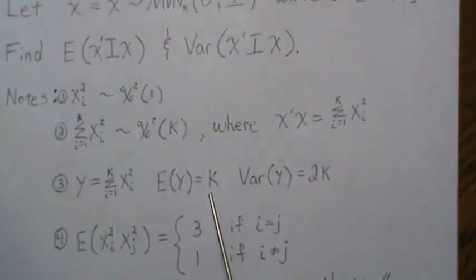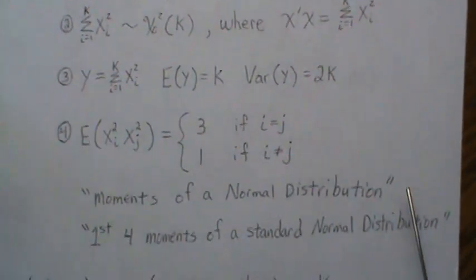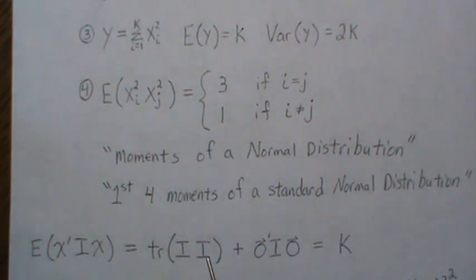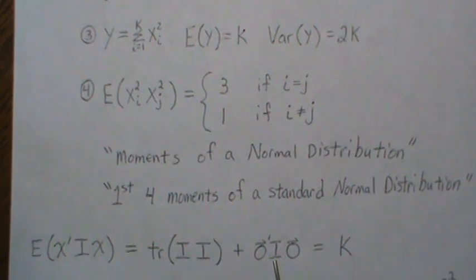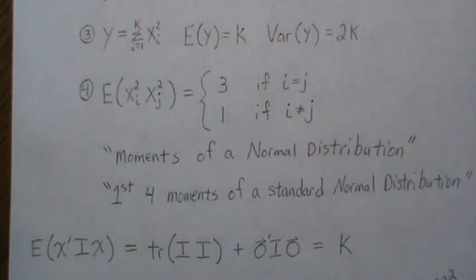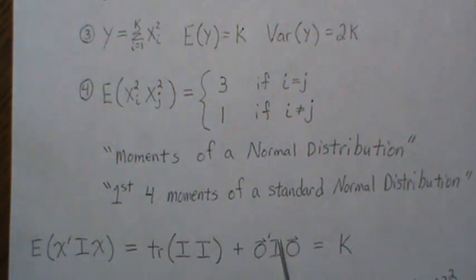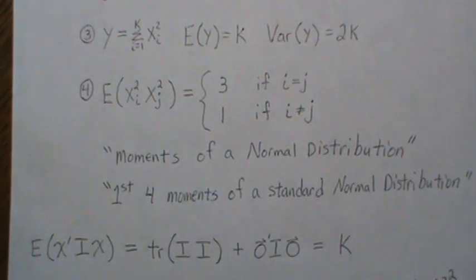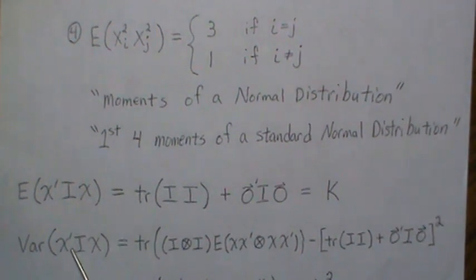So the expected value of X'IX: using the formula, it's the trace of A times the variance-covariance matrix plus mu'A mu. Here A is I and the variance-covariance matrix is I, and the mean is zero since we're assuming a standard multivariate normal. So the mean terms vanish, and we get the trace of a k-dimensional identity matrix times I, which is I, and the trace is the sum of diagonals, which is k. The expected value is k — correct.